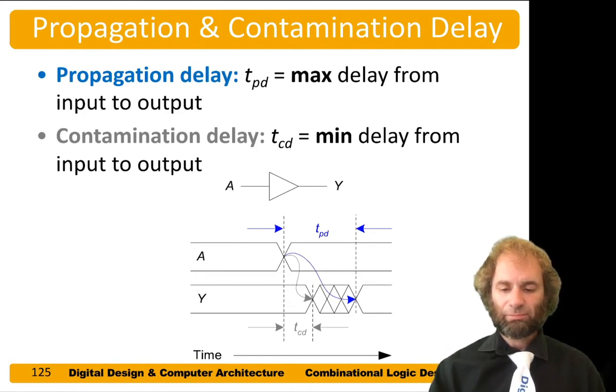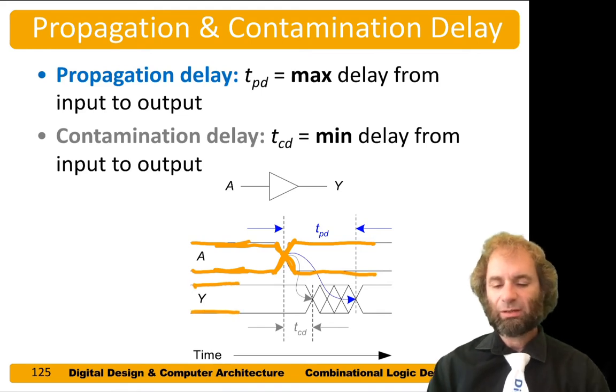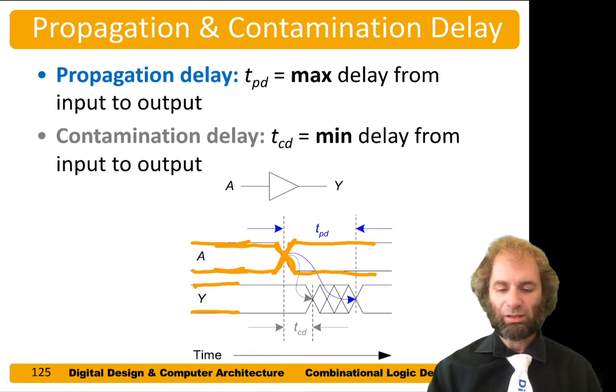In general, we could draw a diagram like this where A had some value—it could be either 0 or 1, we don't care what it is—but at some time it changes to the other value. That's what this crossover means. In response, the output Y initially had some value. It was the same as A, but we don't really care what it is.